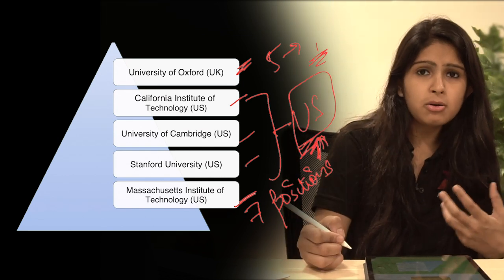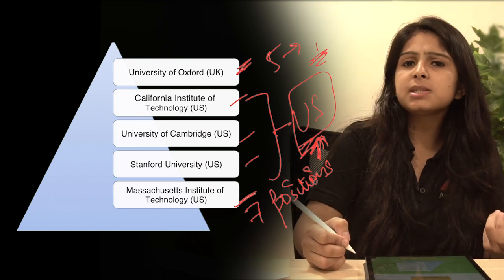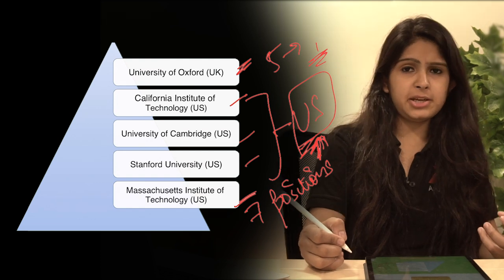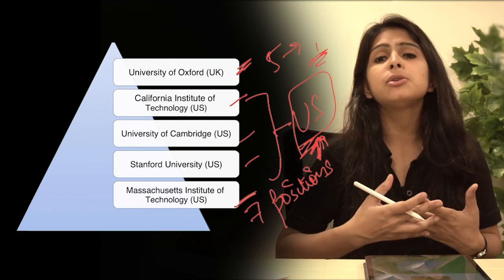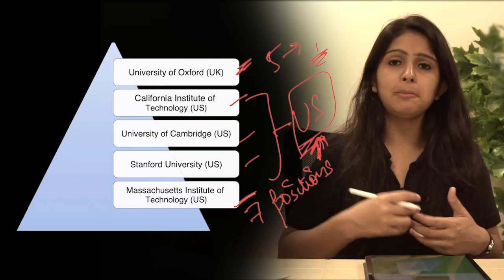So now this is a global level where there are conscious institutions that are top in the world. So now coming to Indian scenario, now let's see how Indian universities are representing and what role they play.